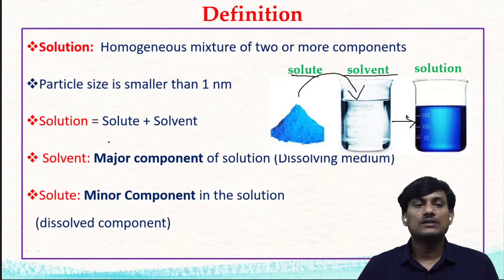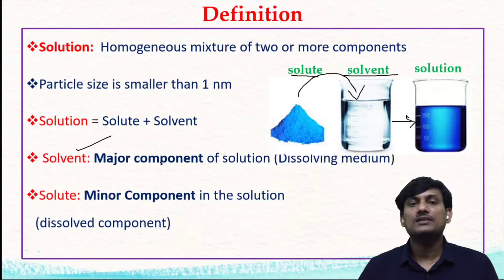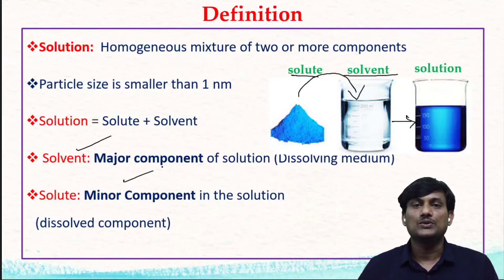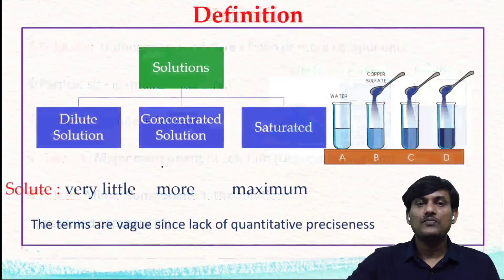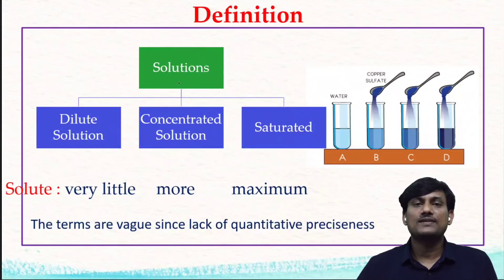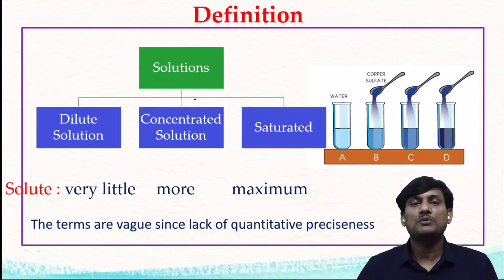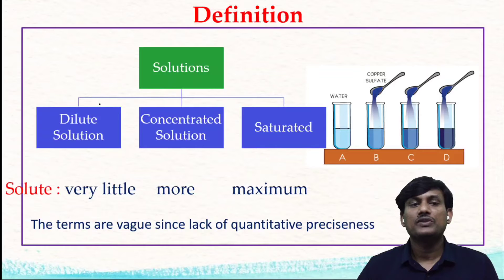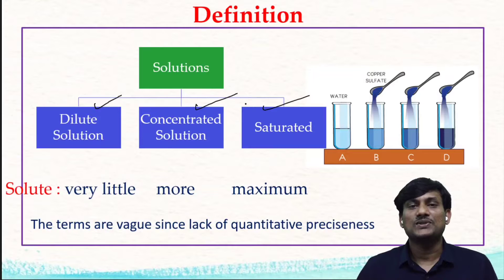Generally in a solution, the major component is called the solvent and the minor component is called the solute. Based on concentration — that is, the relative amount of solute to a definite amount of solvent — solutions can be classified into dilute solution, concentrated solution, and saturated solution.